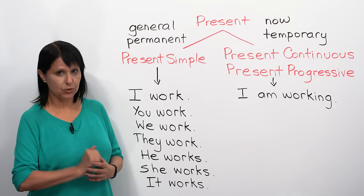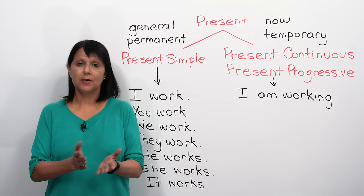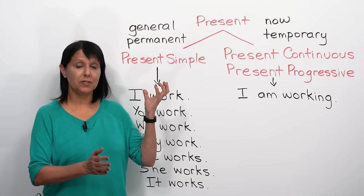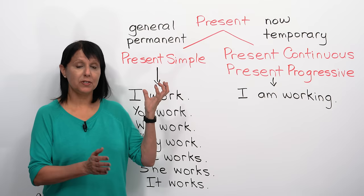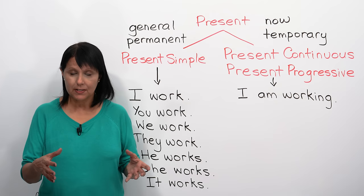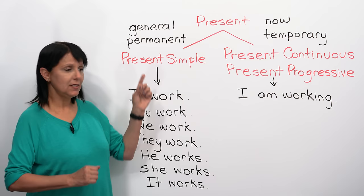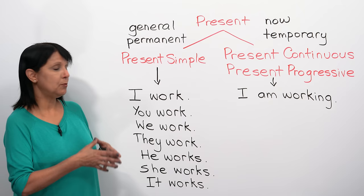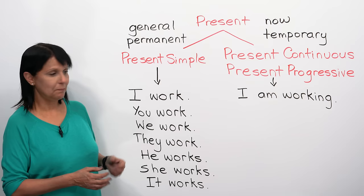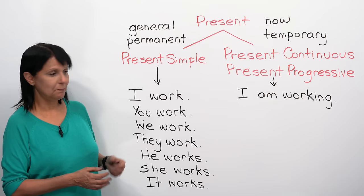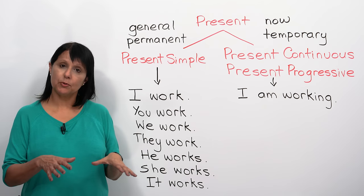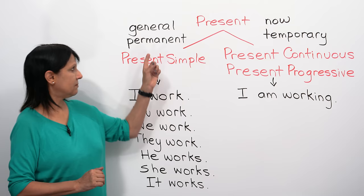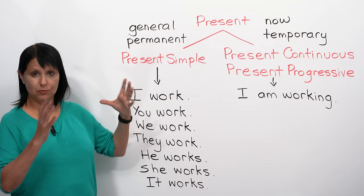Present simple is also for something that's more or less permanent. For example, if you have a job - no job or nothing in life is necessarily permanent - but let's say you're not changing jobs every day. So more or less, this is the job you always have, your permanent job. We use present simple and say I work at the bank, I work in the store. But I am working would be for right now or for something temporary - only for a short period of time. Those are some basic differences between these two tenses.